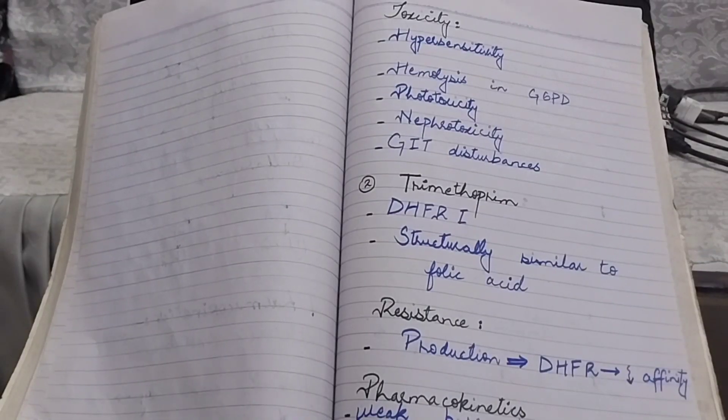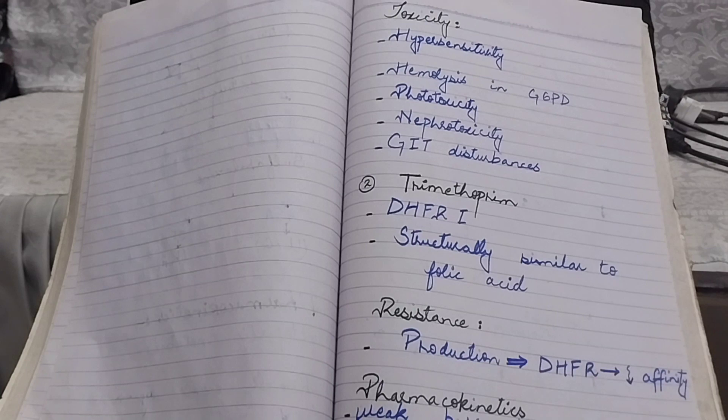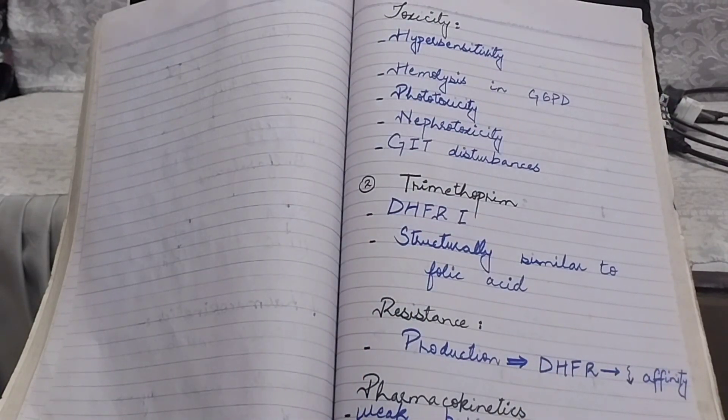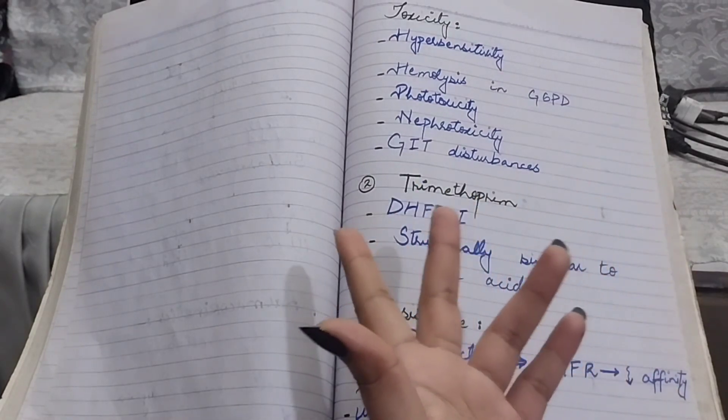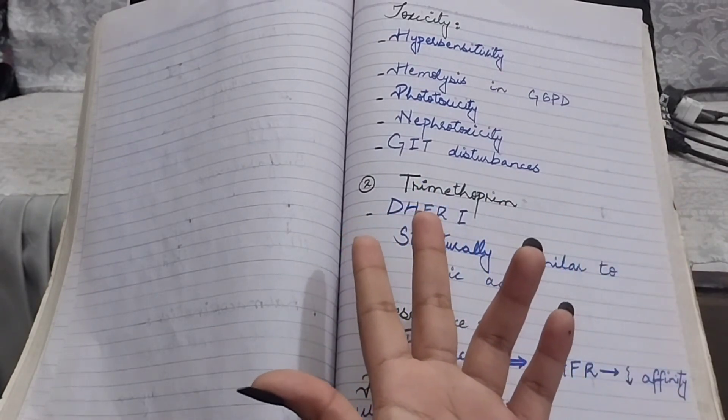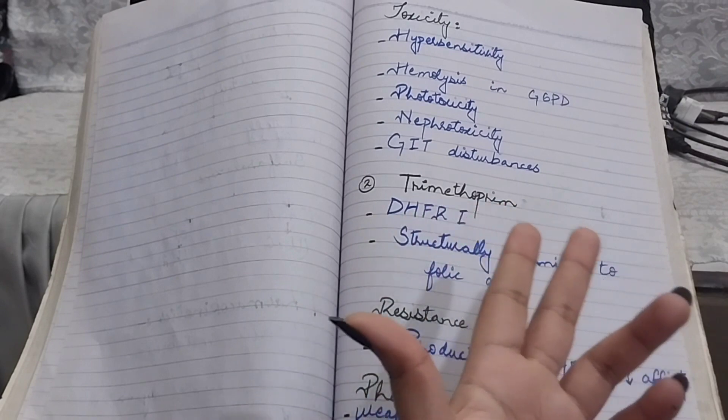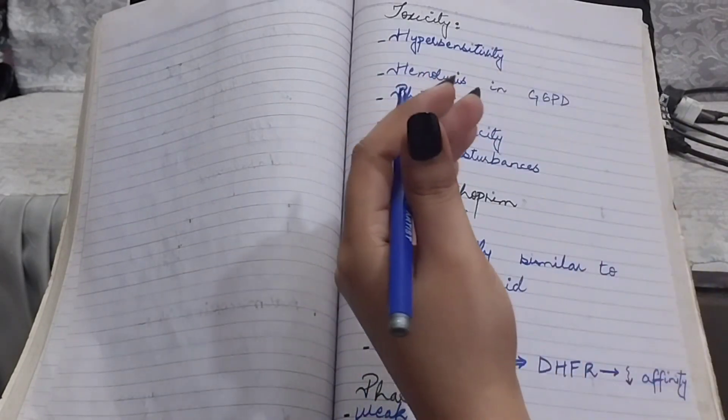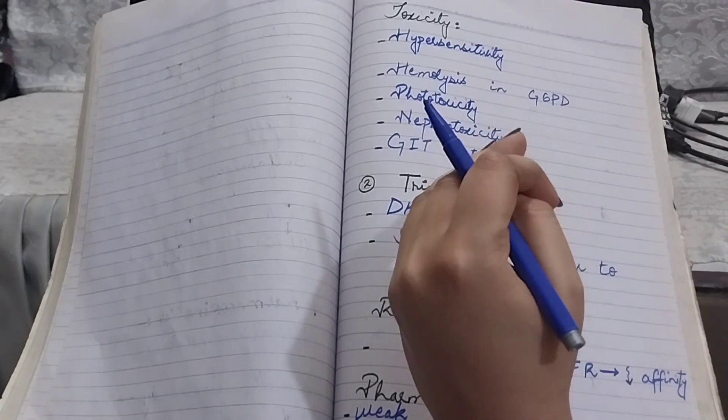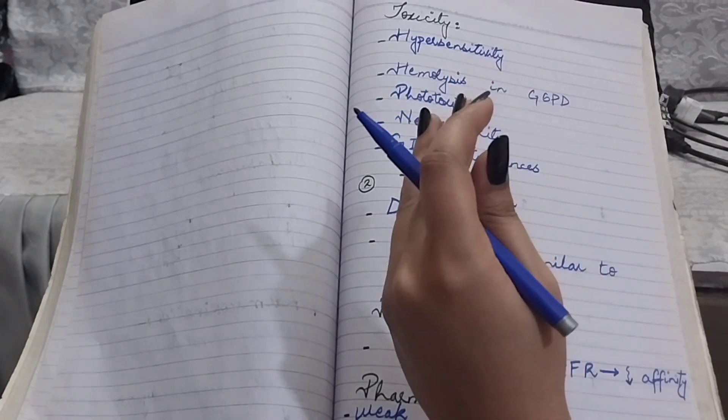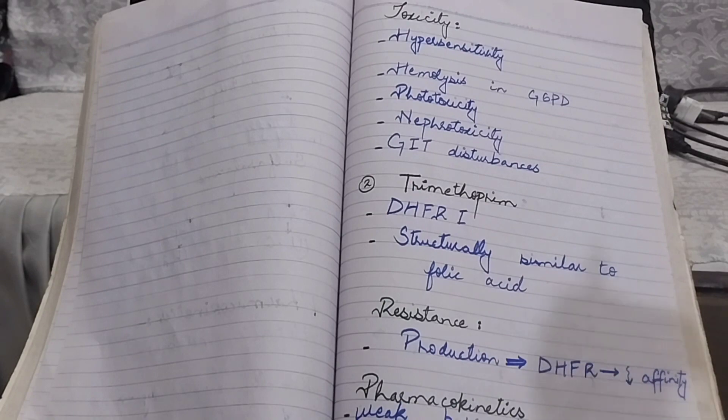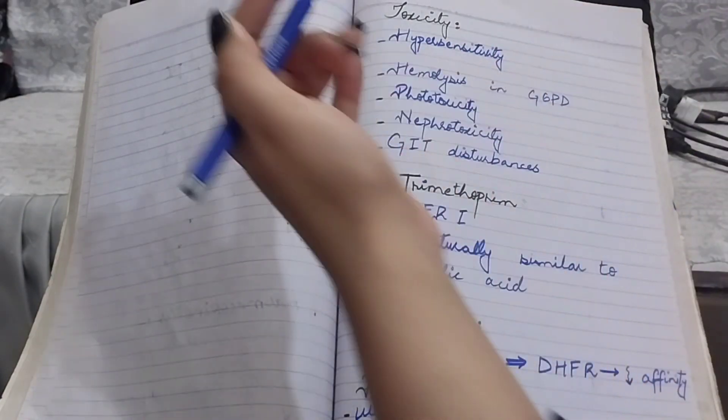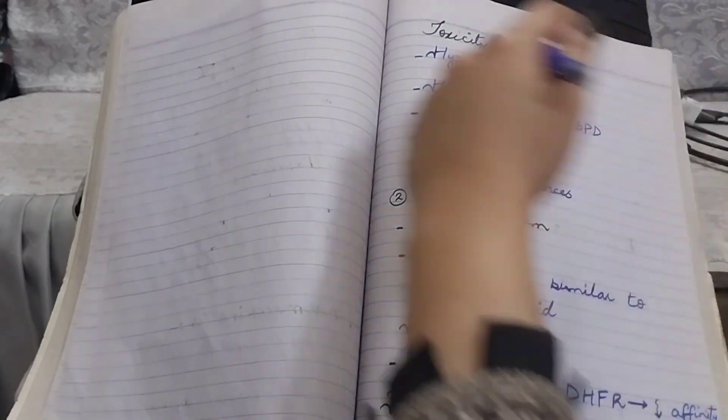Let's see the toxicity of sulfonamides. That includes hypersensitivity. Sulfonamides can cause allergic reactions including skin rashes and fever that occur commonly. Cross-allergenicity between the individual sulfonamides should be assumed.